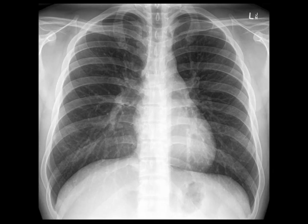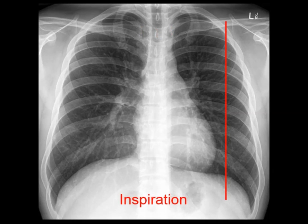To check rotation, look at the clavicular heads and spinous processes. If the spinous processes are halfway between the clavicular heads, the patient is normally rotated. Next, check for adequate inspiration by looking at the mid-clavicular line and seeing which anterior rib intersects the diaphragm at this point. It should normally be the 5th, 6th or 7th. More ribs means the lungs are hyperinflated, often seen in COPD. Fewer means the patient may not have taken a full breath when the x-ray was taken.